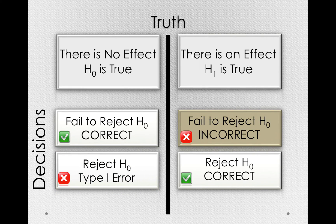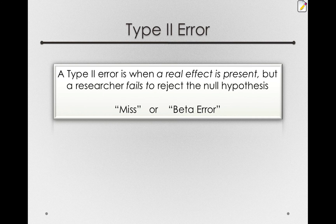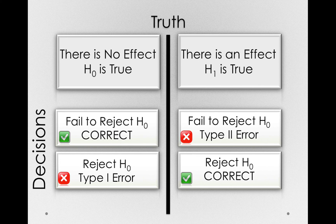On the other hand, when we fail to reject the null hypothesis when we're in a world where the null hypothesis is really false, this is known as a Type 2 error. A Type 2 error is when a real effect is present, but a researcher fails to reject the null hypothesis. This is known as a miss, or a beta error. All we're doing here is showing the matches and mismatches between a decision and the truth in the world — this comes from simple binary classification.